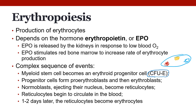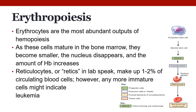Progenitor cells form proerythroblasts, then erythroblasts, then normoblasts, which eject their nucleus to become reticulocytes. Reticulocytes begin to circulate in the blood — 'retics' in lab speak — and should make up one to two percent of circulating blood cells. A high retic count could indicate myeloid leukemia. Less than one to two percent could indicate a problem with hemopoiesis, such as not enough iron in your diet or not enough EPO being produced by your kidneys, meaning you're destined to become anemic.